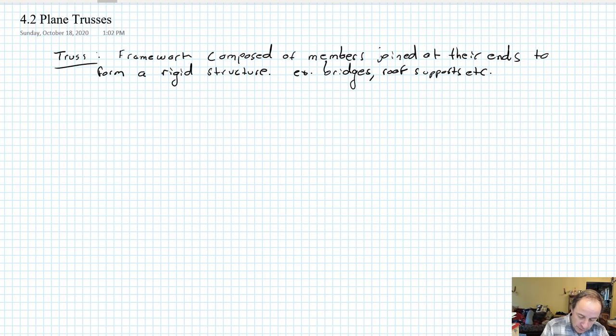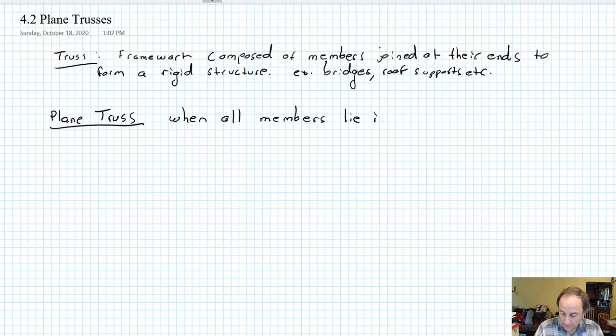There are two basic flavors of trusses: there's the plane truss, and this is pretty obvious when all members lie in a plane—much easier to analyze, and a lot of situations can be simplified to that—and space trusses, which as you probably guess, this is a 3D truss.